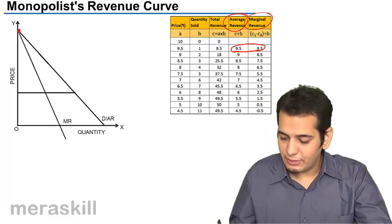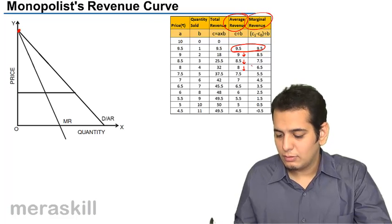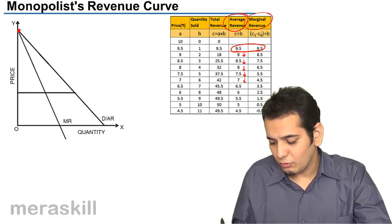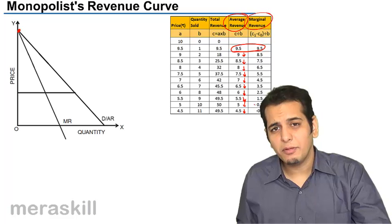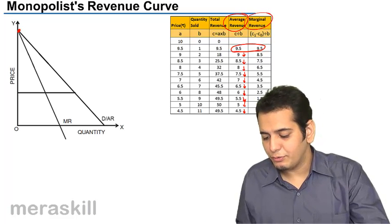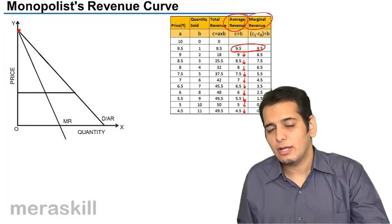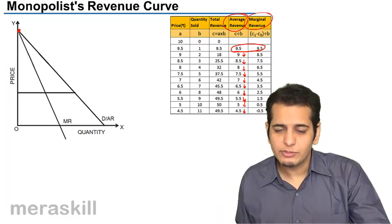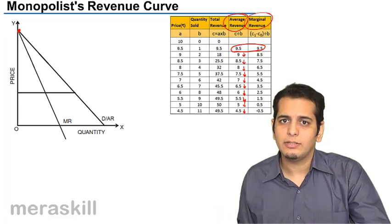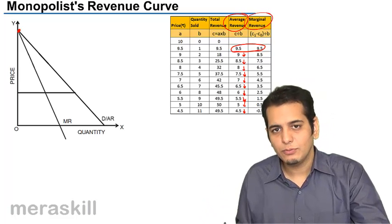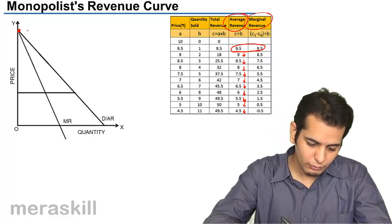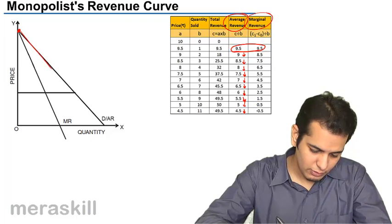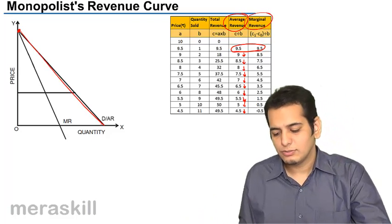You can see that the average revenue is going on falling. If you remember, in perfect competition the average revenue was the same — it was constant at all levels, the same for whatever number of units were sold by the firm. But in the case of monopoly, the average revenue keeps on falling at each level, so the curve will be downward sloping.